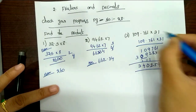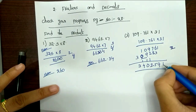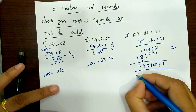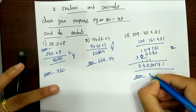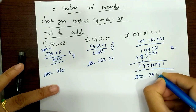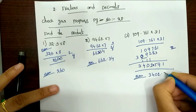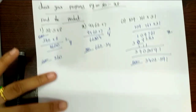Three digits before — put a point here, okay? So your answer is 3402.591, okay?